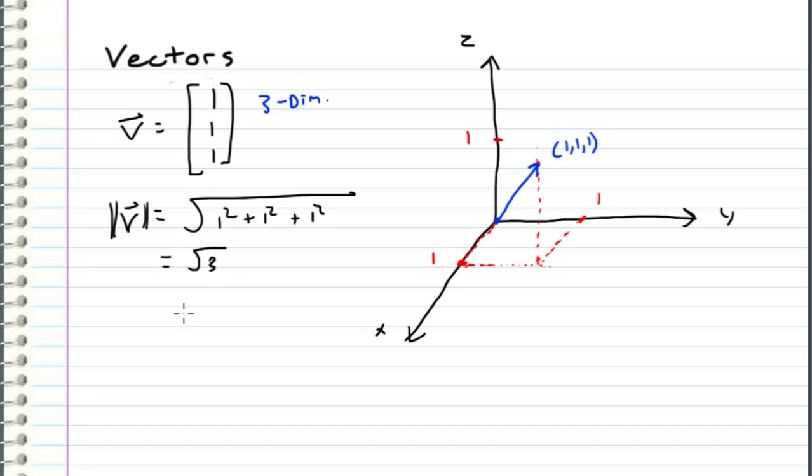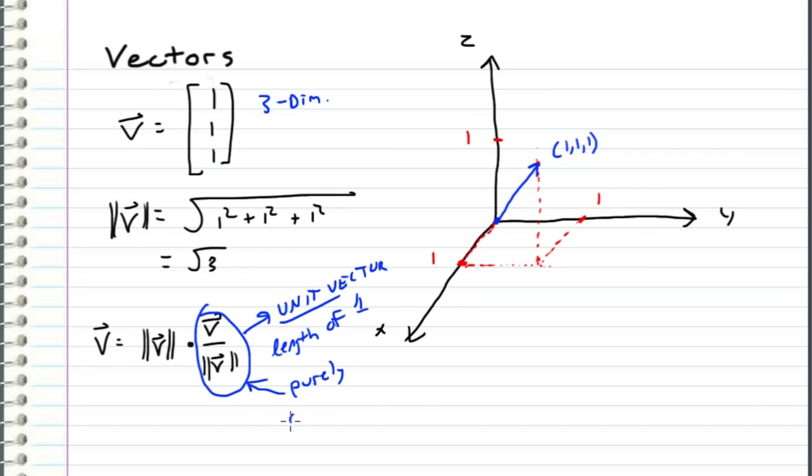And if we wanted to represent the direction of this vector, well, we would express the direction in what's called a unit vector. So if I take the vector v, and I factor out its magnitude, what I would get is the following equation, where this component right here is what we refer to as a unit vector. A vector divided by its magnitude is a unit vector, and it always has a length or magnitude of 1. So what this represents is purely directional information, and this term represents the magnitude of the vector. So what we've done is we've broken up a vector into two components, its magnitude and its direction.